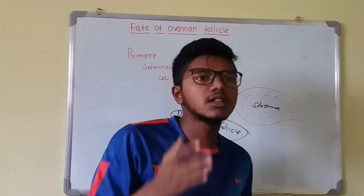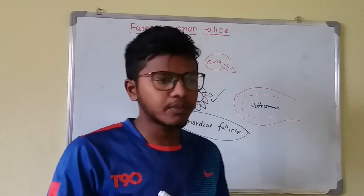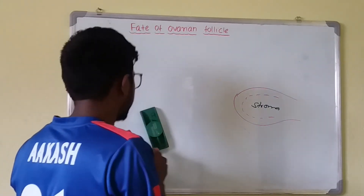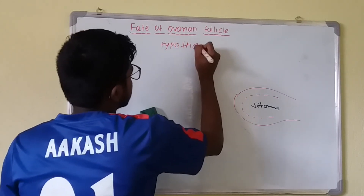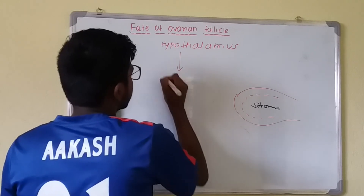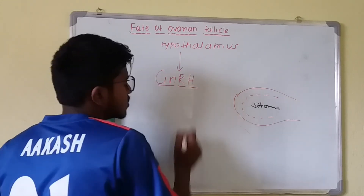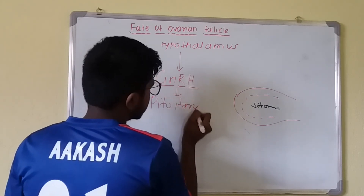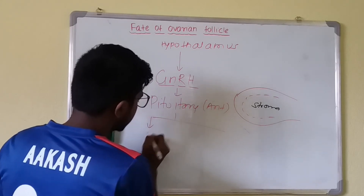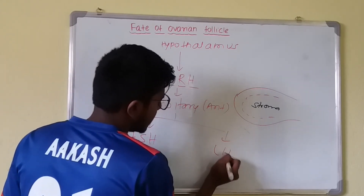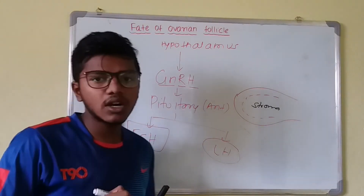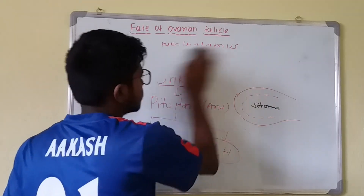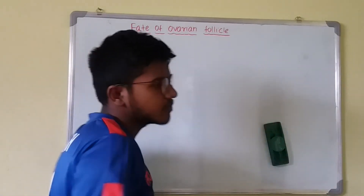When the child undergoes puberty or adolescence, the hypothalamus secretes GnRH — gonadotropin releasing hormone — intermittently. GnRH acts on the anterior pituitary gland, which then secretes two hormones: follicle stimulating hormone (FSH) and LH. In the first phase, FSH is secreted to focus on the development of the ovarian follicle. A child is born with a single primordial stage follicle which FSH will now act upon.